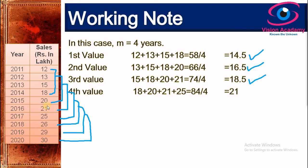For the fourth value, I start from 18, 20, 21, and 25, which accounts for 84, divided by 4, giving a fourth value of 21.